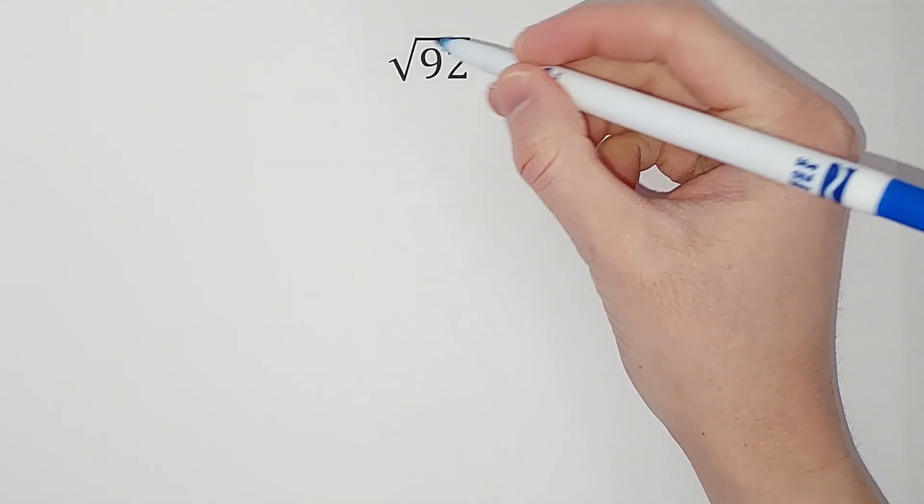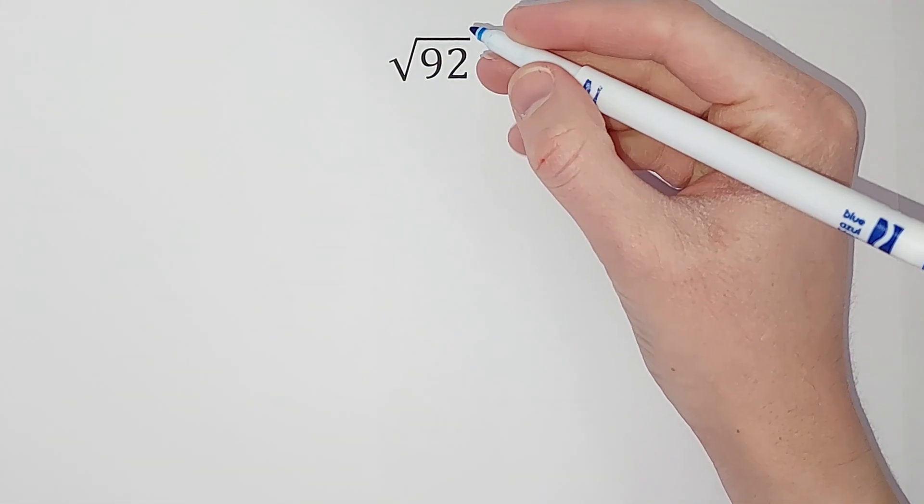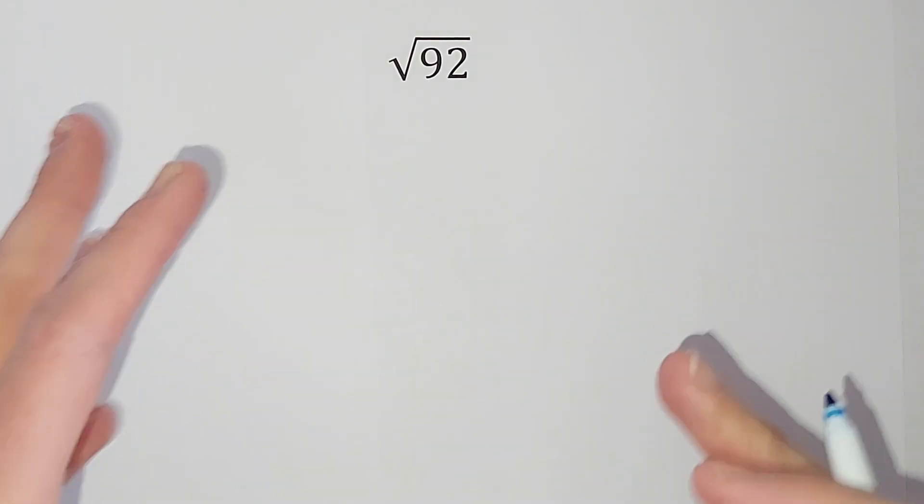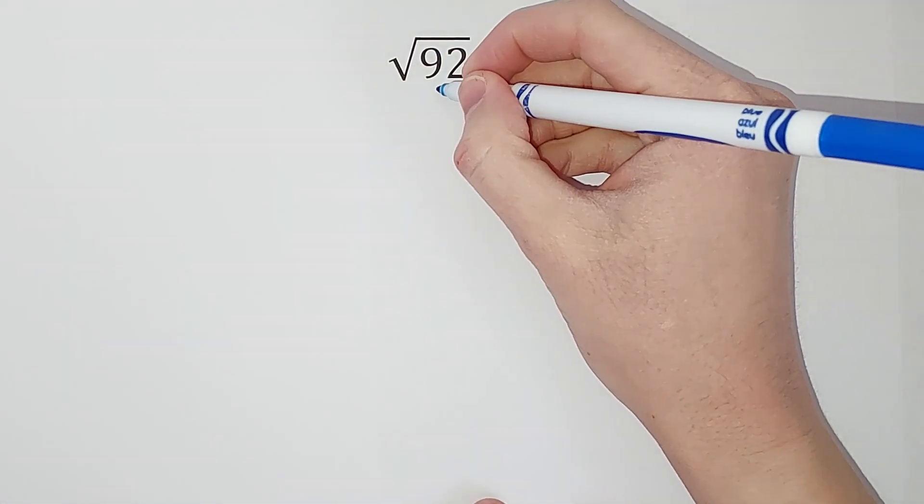So how can I work with this? Well, what I can do is try to break it down, and let me show you what that means. What we're going to do is figure out what numbers multiply to give me this number and see if there are any numbers in that that have a nice whole number square root answer.